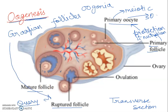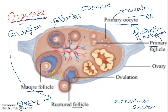The secondary oocyte will be released from the follicle. The Graafian follicle will be ruptured and finally the secondary oocyte will be released from the ovary.